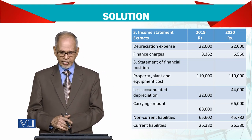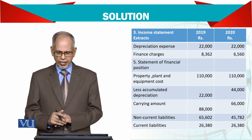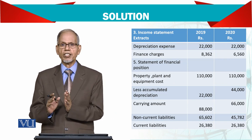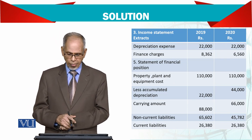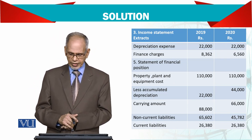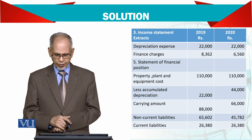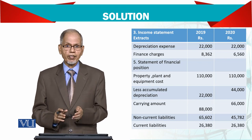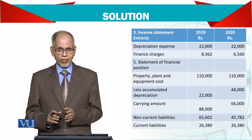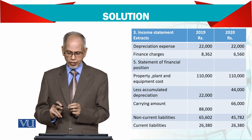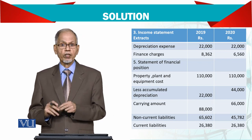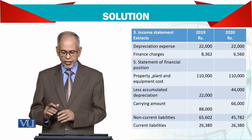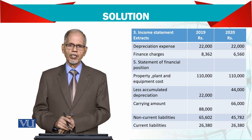In the balance sheet under property, plant and equipment: cost is 110,000. First-year accumulated depreciation is 22,000, giving a carrying amount of 88,000. In the second year accumulated depreciation is 44,000, giving a carrying amount of 66,000. For liabilities: since payment is made at the beginning of the year, the installment amount of 26,380 is the current liability, and the balance is long-term. Similarly in 2020, the current portion remains 26,380 and the balance is long-term.